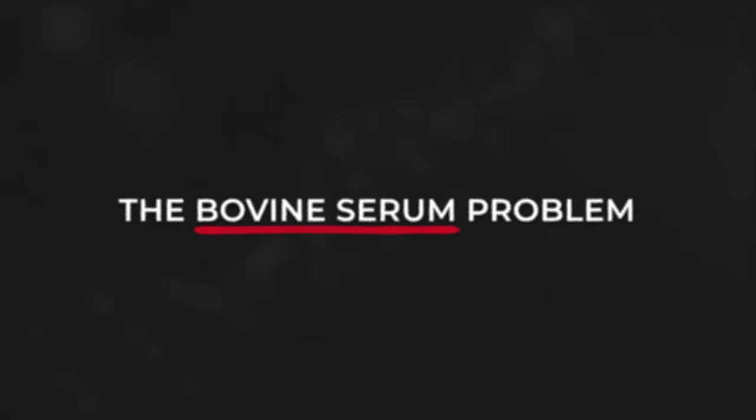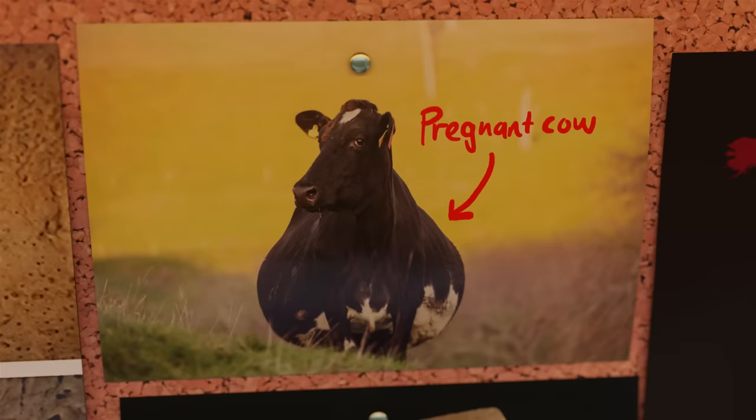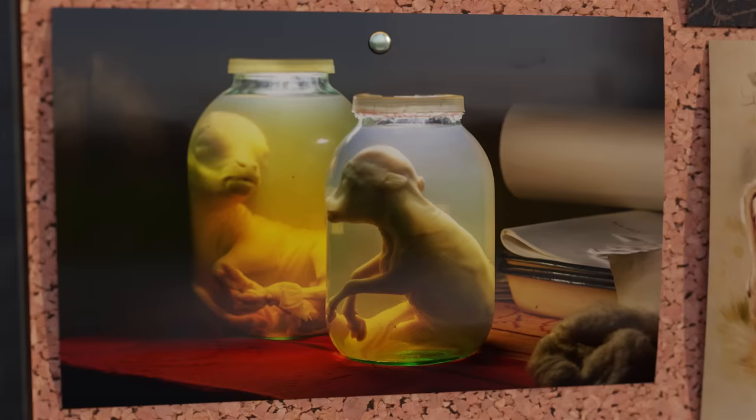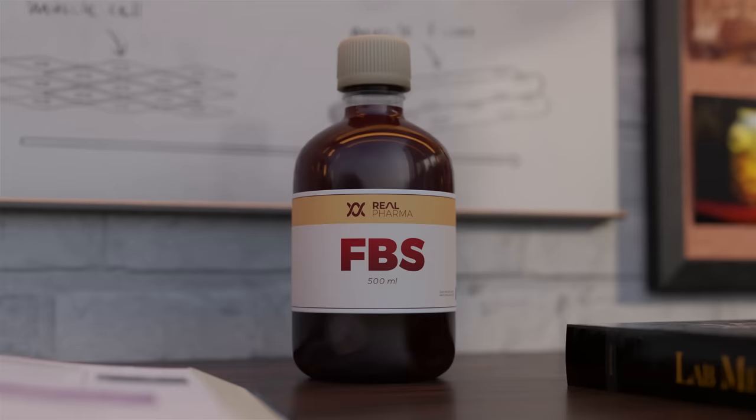Fetal Bovine Serum is a serum made from the blood of cow fetuses. If a cow is going for slaughter and happens to be pregnant, the fetus is removed, and its blood drained, all while it dies a slow death. The fetus is kept alive for as long as possible during this process to ensure the quality of the blood remains good. The blood is then refined, resulting in Fetal Bovine Serum, or FBS.